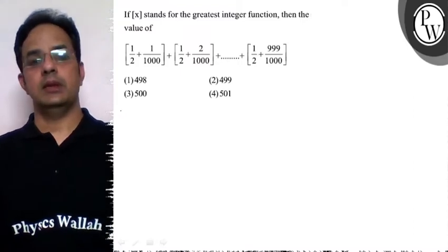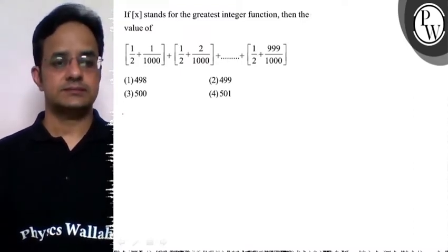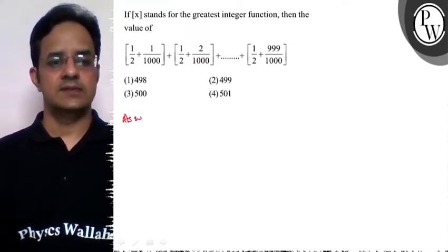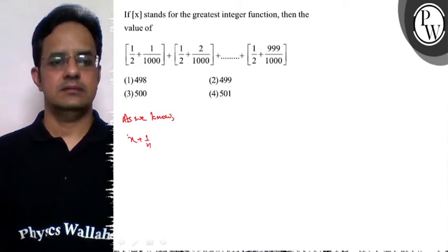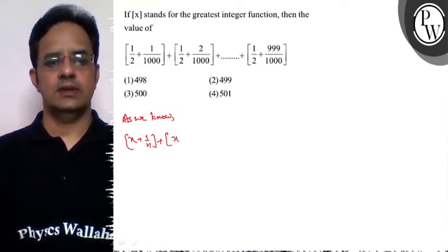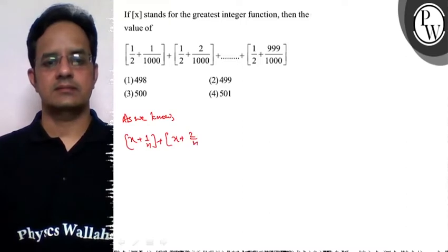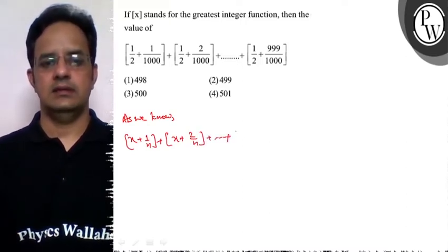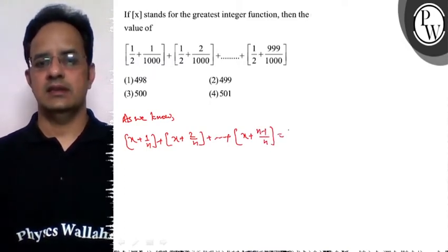We can use a direct property of the function here. As we know that x plus one by n greatest integer plus greatest integer of x plus two by n up till x plus n minus one upon n is same as greatest integer of nx.